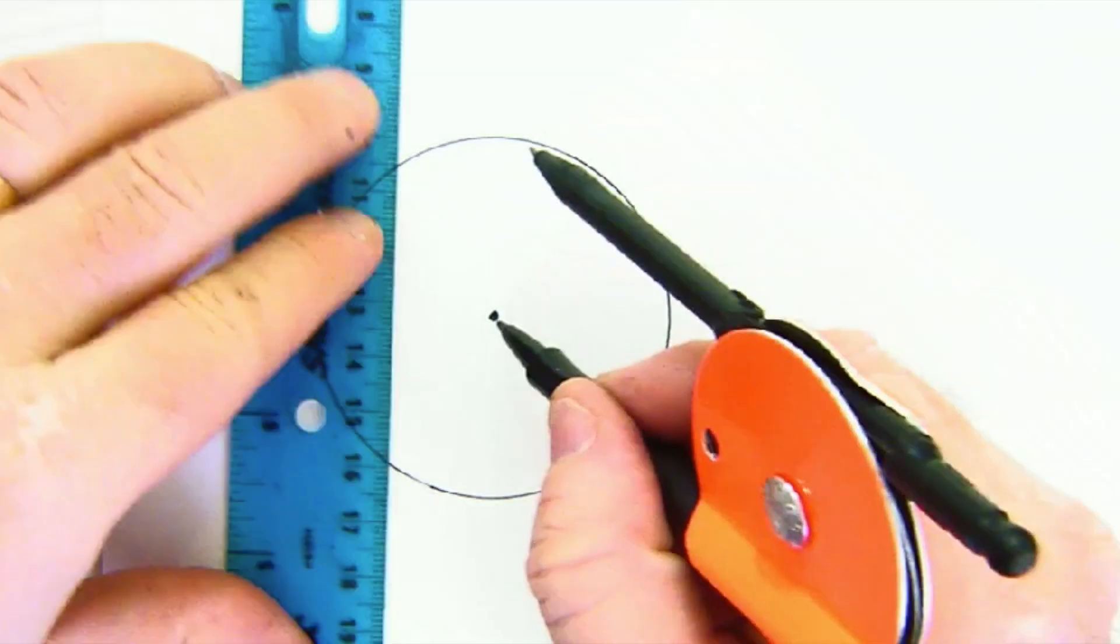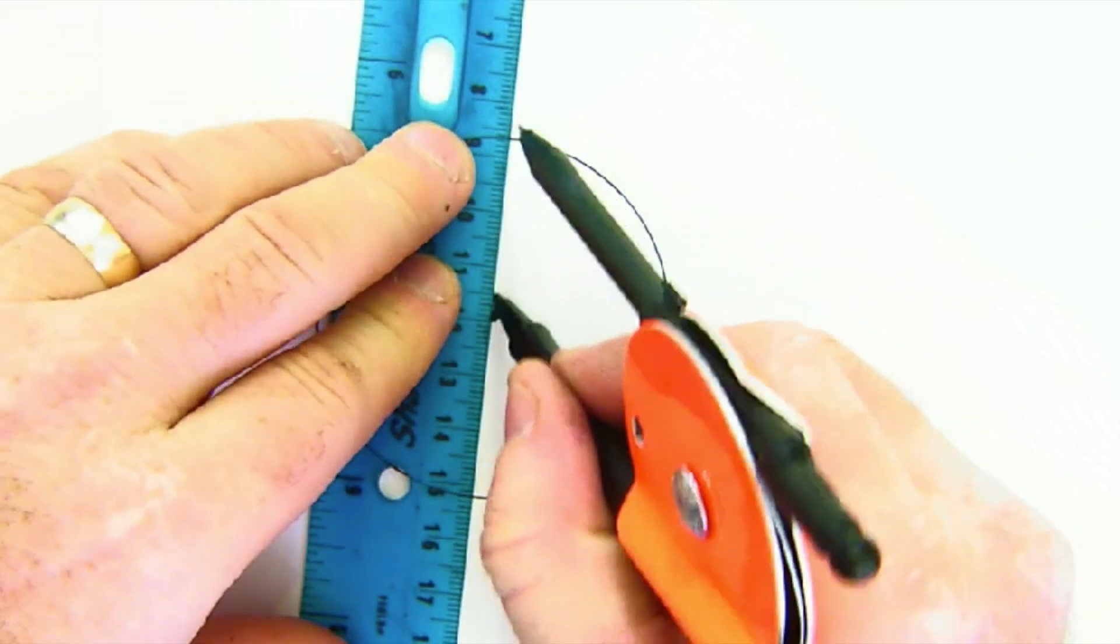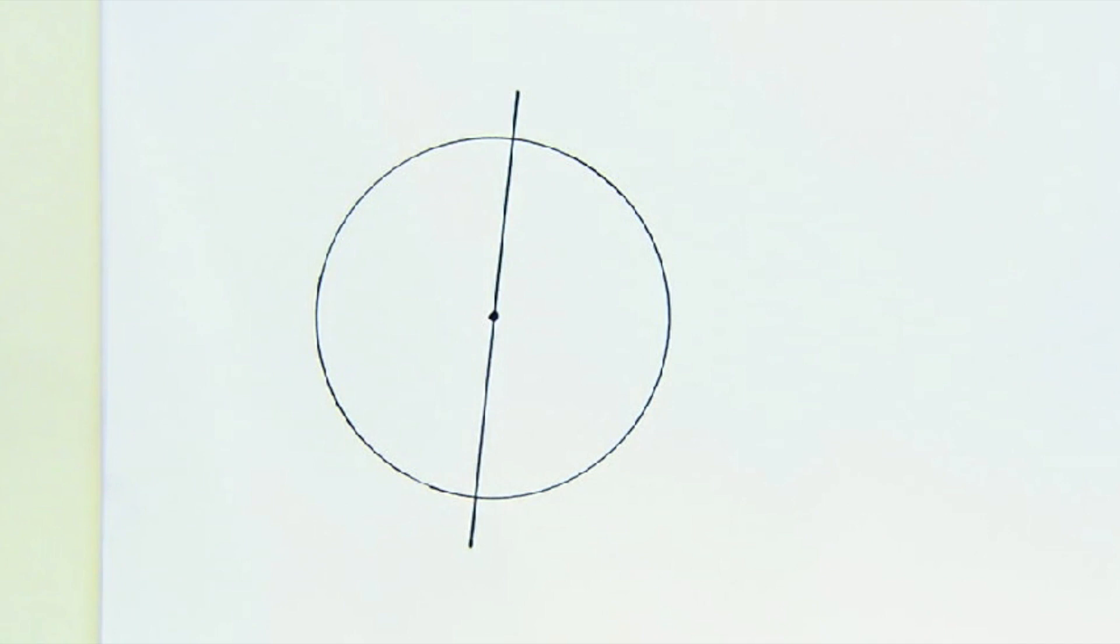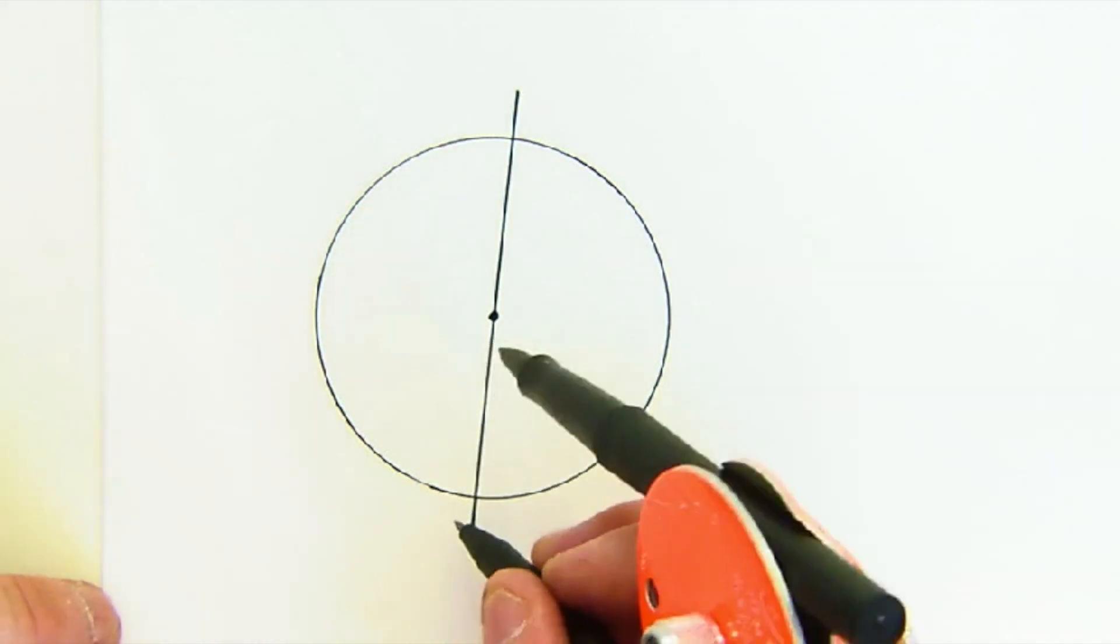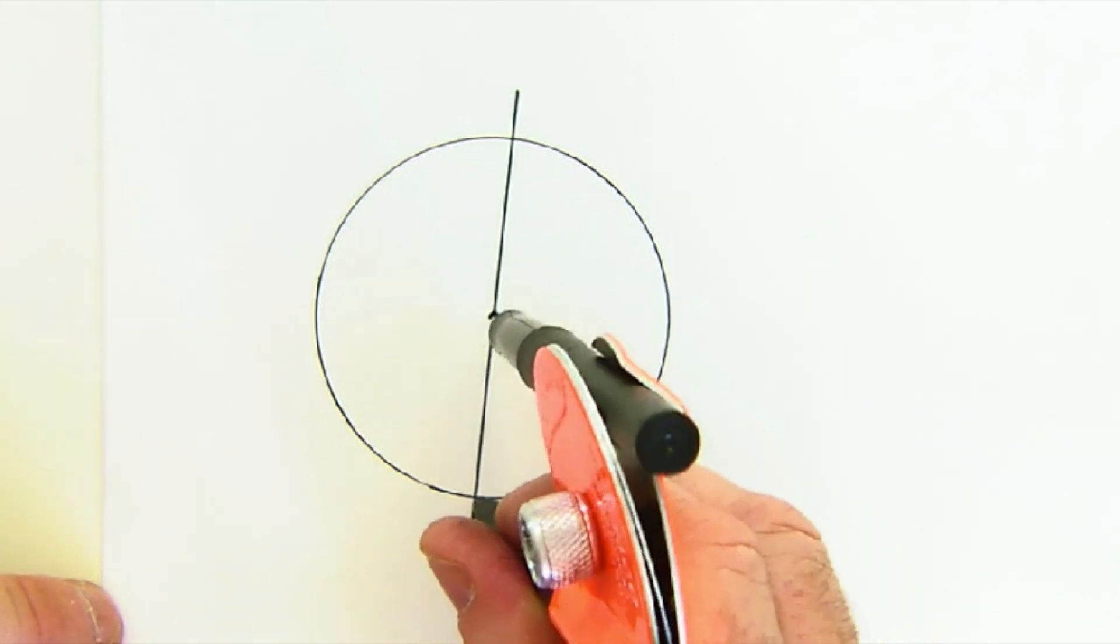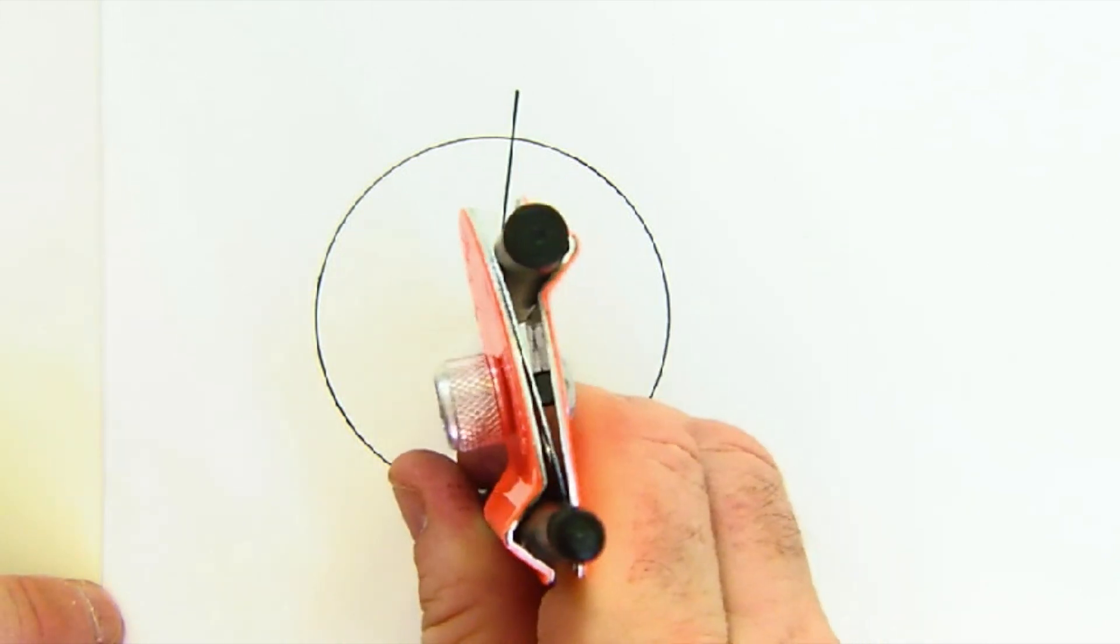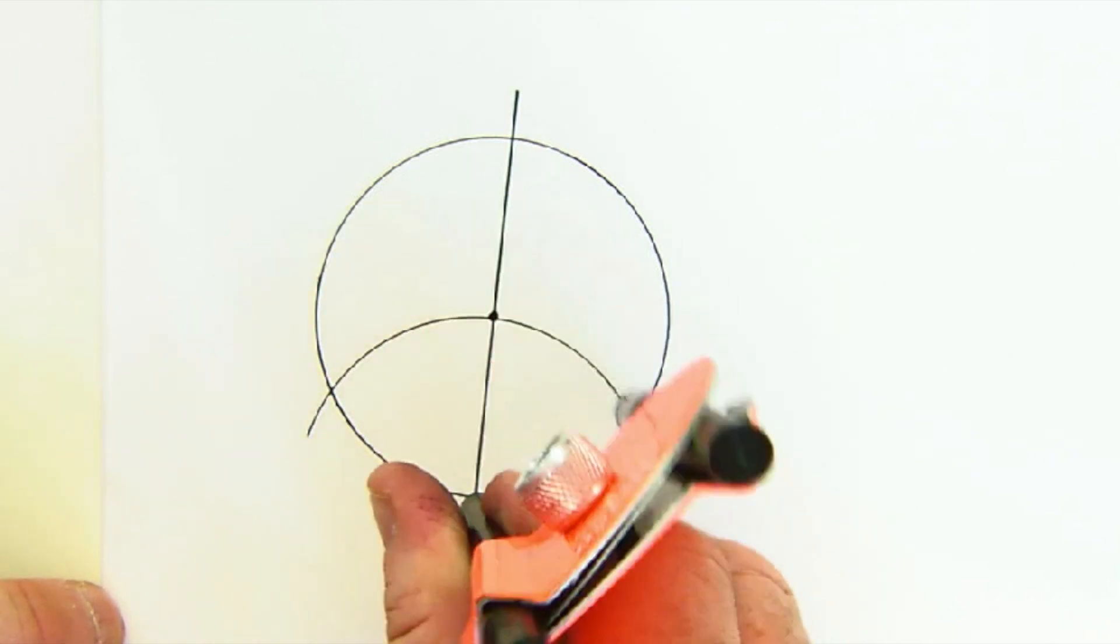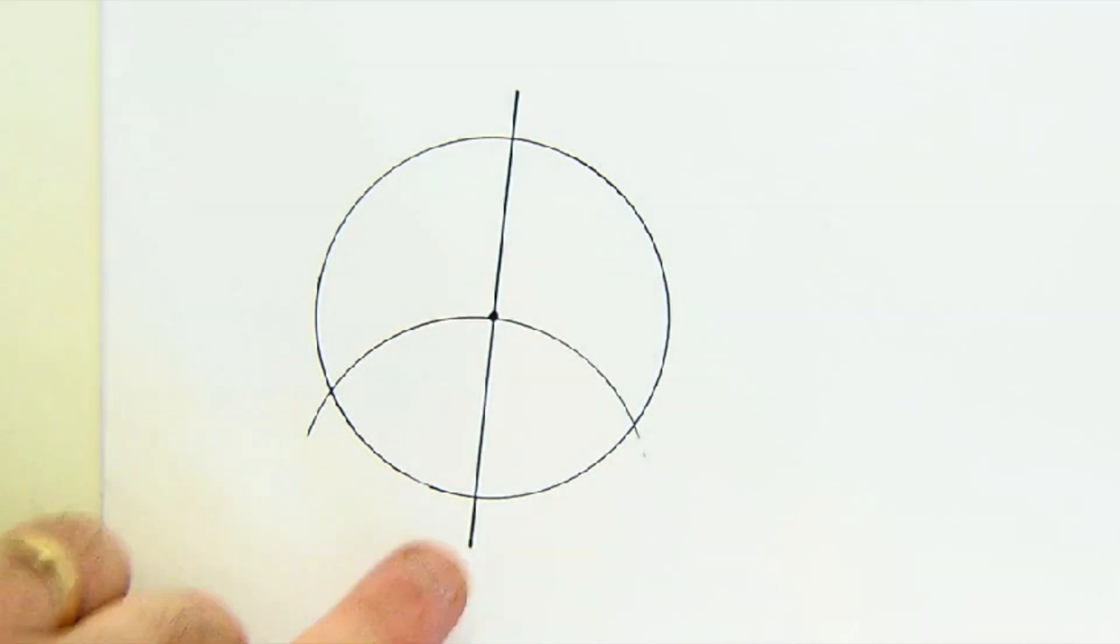Now to do this, I'm going to draw a line that forms a diameter. And what I'm going to do at this stage is use that radius, it's still on my compass, and I'm going to make an arc from one of those ends of the diameter.